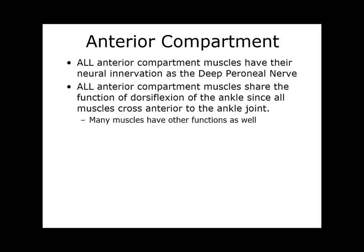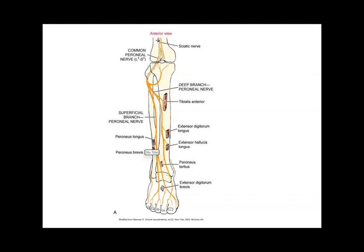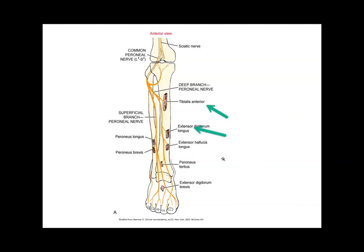Let's look at the neural innervation. The sciatic nerve separates into the tibial and the common peroneal. The superficial branch of the common peroneal stays and goes down to innervate the lateral muscles, and then the deep peroneal travels from posterior to anterior to innervate all the anterior compartment muscles: the tibialis anterior, extensor digitorum longus, extensor hallucis longus, and peroneus tertius.